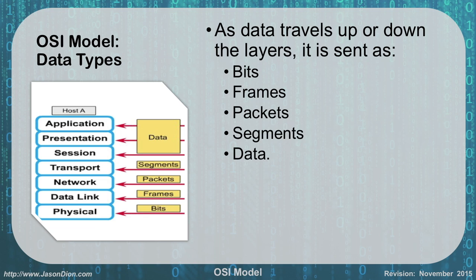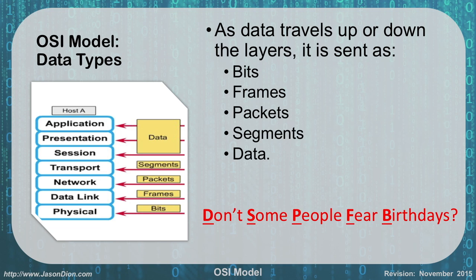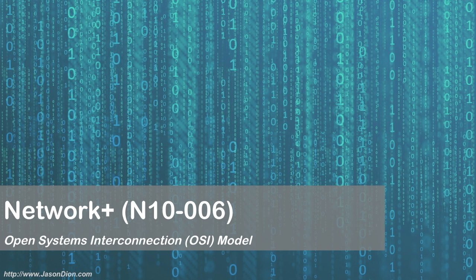So if we start out with data, we go down through segments, packets, frames, and bits, transmit it over the wire, and when you receive it, it goes bits, frames, packets, segments, data — up and down those layers. You also need to remember where each data type fits within the layers. There's an acronym for that as well: 'Don't Some People Fear Birthdays' — DSPFB, going top to bottom. And that is the OSI model.